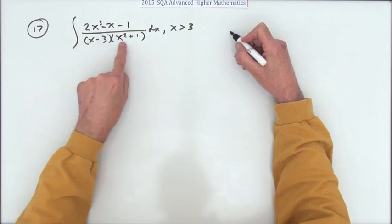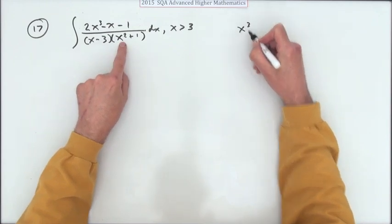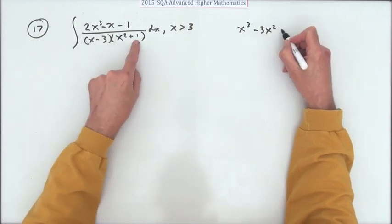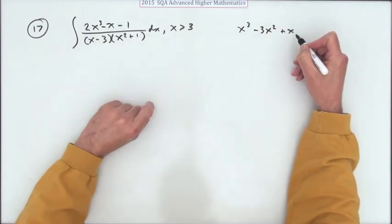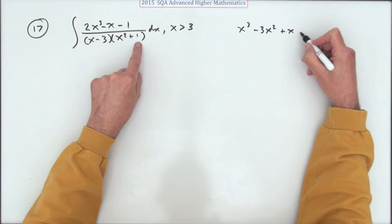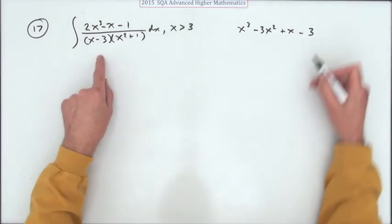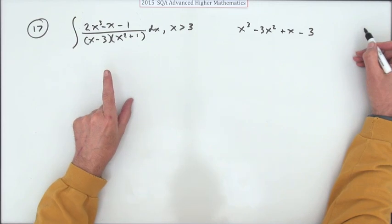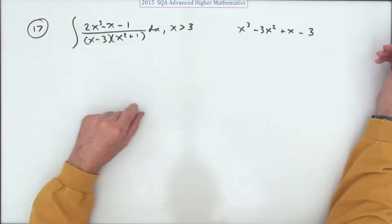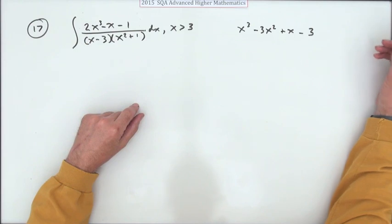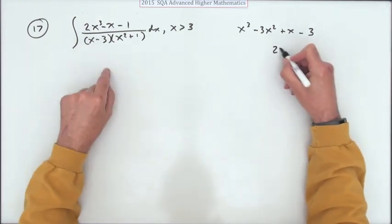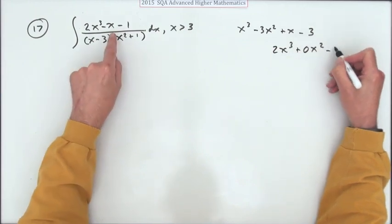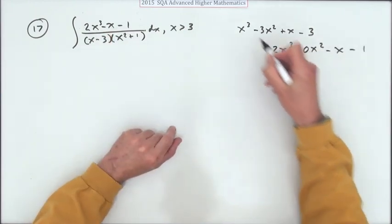Either way I'll need to know where this comes to, so I'll need to multiply that out. I'll have an x³ minus 3x² plus x and minus 3. I can either divide that into this or just realize it's the same as saying how many times does it go in. Just take it out twice, set out the subtraction. I've got 2x³ and no x² and minus x and minus 1.